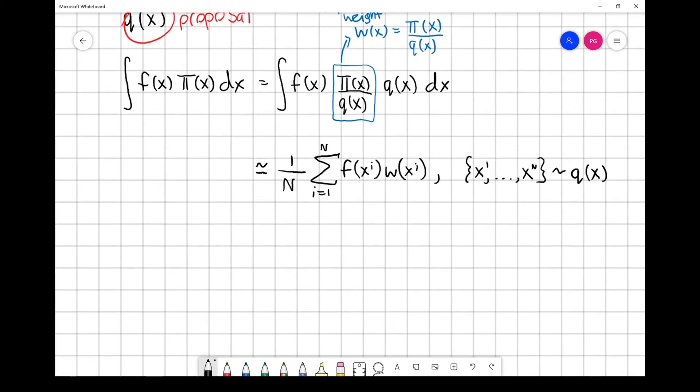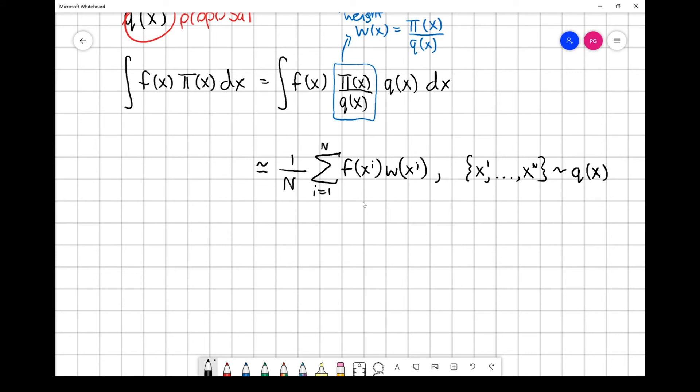One way that you might want to think about this is we're generating samples from the wrong distribution, because it's not π, but these weights correct for that error. That's one of the interpretations you can use for importance sampling.